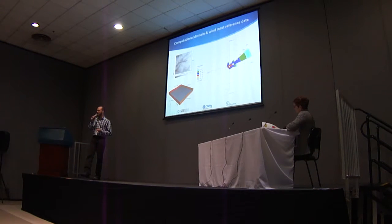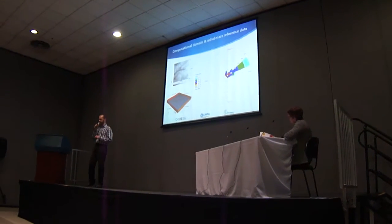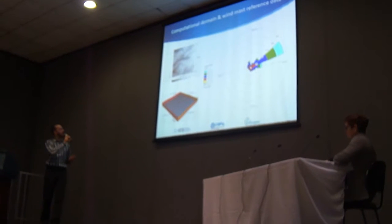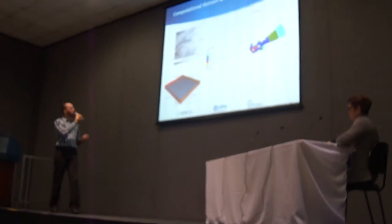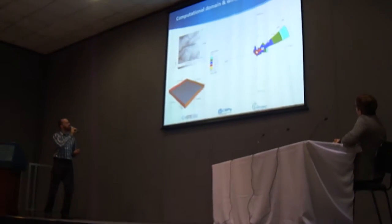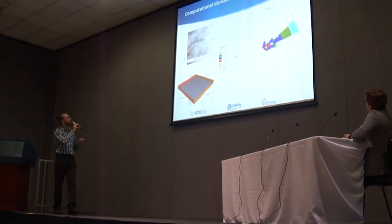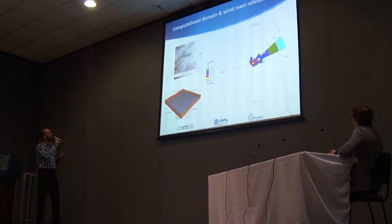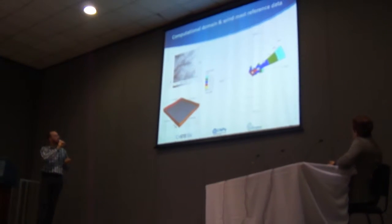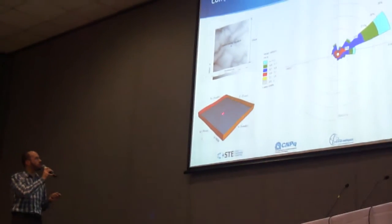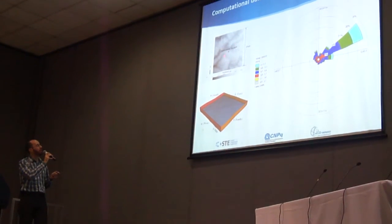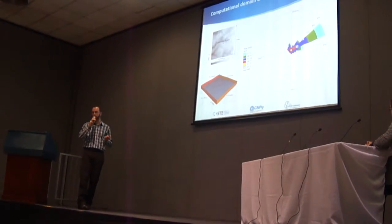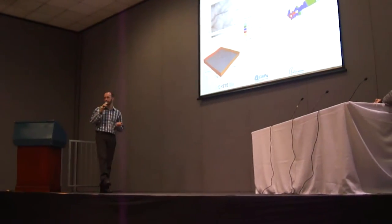Our research is based on two main data sources. The first is our CFD calculations and the second is real wind measurements made by real wind masts. We are making our calculations on a real relief. Here is our computational domain — a square region with 10 kilometers per side. We will be comparing the velocity calculated at the point where the anemometer is located with the data provided by the real anemometer.